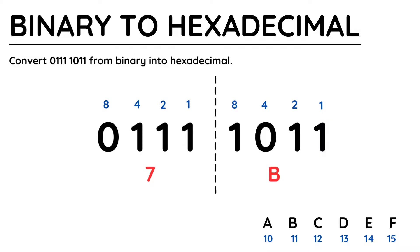The second character is 8 plus 2 plus 1, which makes 11. Remember, hexadecimal doesn't use double digit numbers, so looking at our conversions in the bottom right, we convert 11 into B. And that's it!